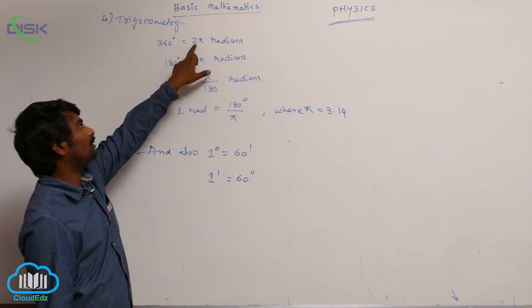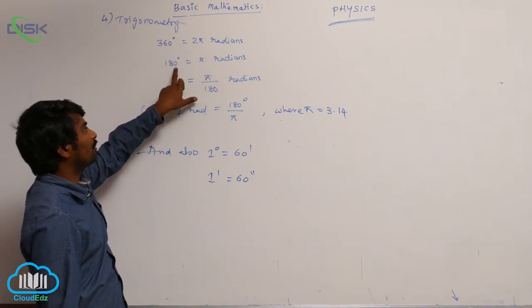Dividing both sides by 2, 180 degrees will be π radians.